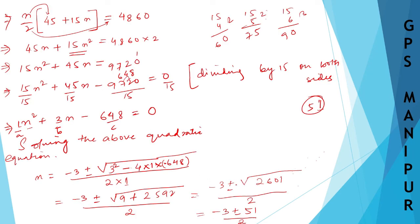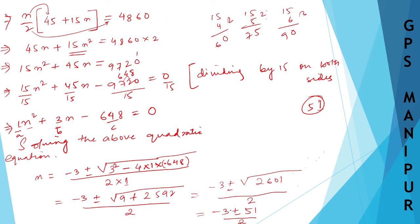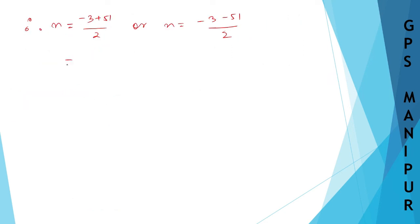Therefore, N is equal to minus 3 plus 51 divided by 2, or N is equal to minus 3 minus 51 divided by 2. Taking the first: 51 minus 3 is 48, divided by 2 is 24. Taking the second: minus 3 minus 51 is minus 54, divided by 2 is minus 27.